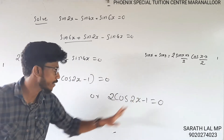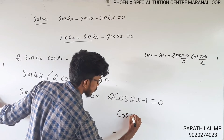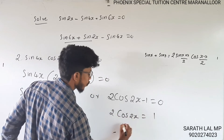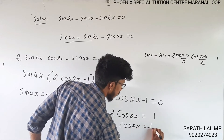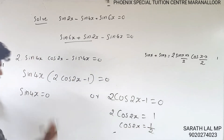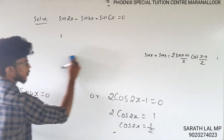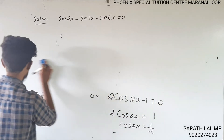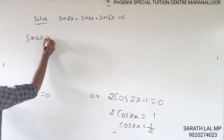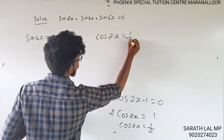From 2cos2x - 1 = 0, we get cos2x = 1/2. And from sin4x = 0, we solve separately. So the two cases are: sin4x = 0 or cos2x = 1/2.